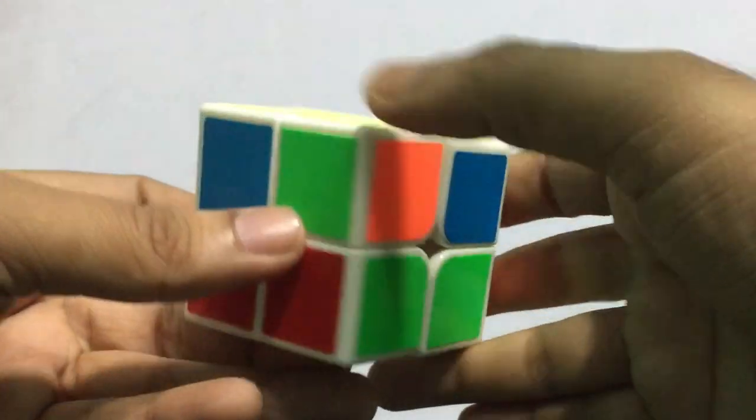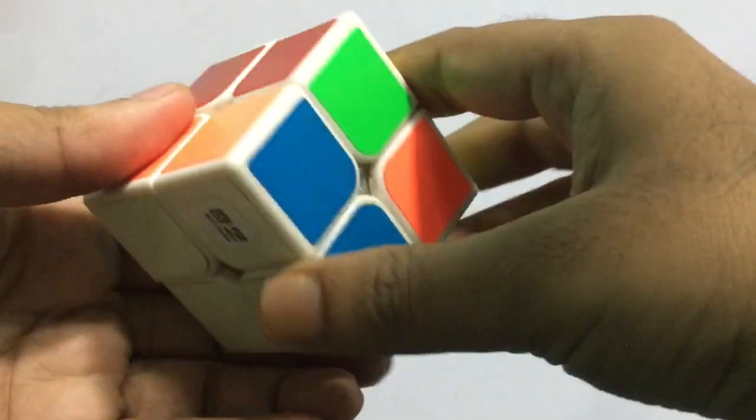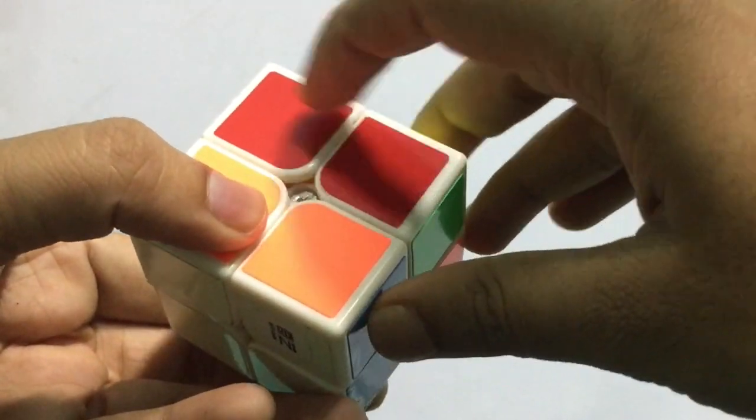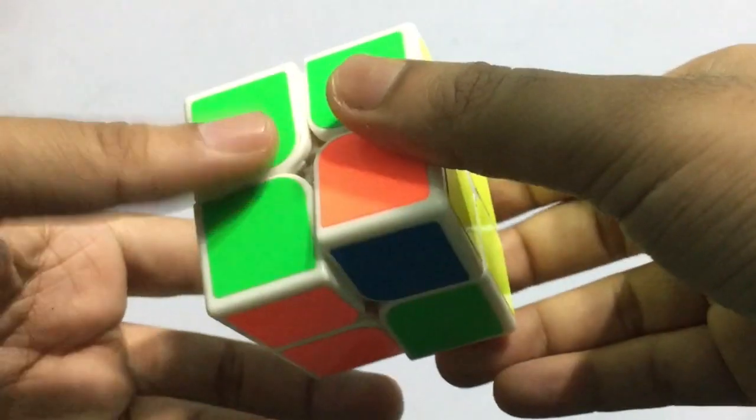Now it is time to solve the bottom two layers. Again, you have to memorize the formula. But meanwhile, if you are getting a piece which is already paired, put it down with the pair.